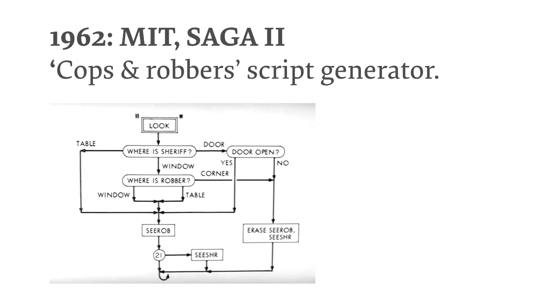This is one of the very first known story generators, done at MIT. It was actually used to film some episodes of television in the United States for CBS. It takes the cops-and-robbers heist model — a very basic story structure — and generates scripts. Unfortunately a lot of the original source material for this is lost to time; there are just a few images like this that have survived. People have been trying to recreate these things in modern code, which I think is really interesting.